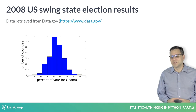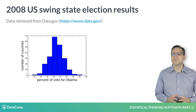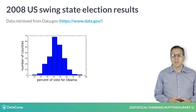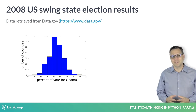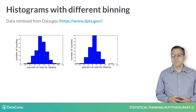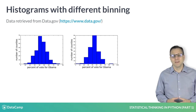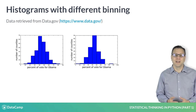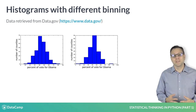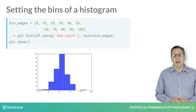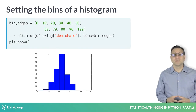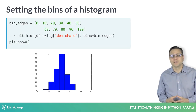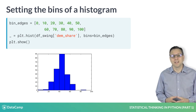You probably didn't notice, but this plot looks slightly different than the first plot I showed. They are different because they have different binning. In the plot on the left, we have ten bins generated automatically by the default settings of plt.hist. I set up the bins on the right by myself — I specified the bin edges and used the bins keyword argument to pass that to plt.hist.